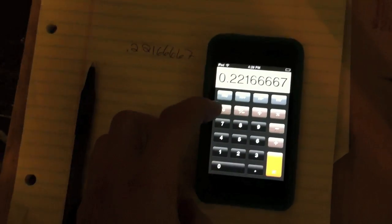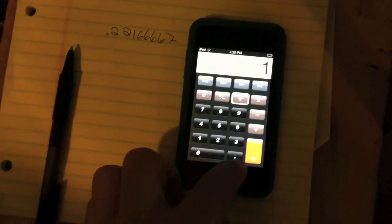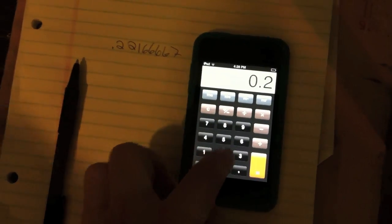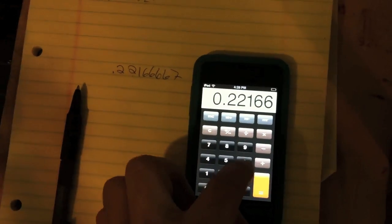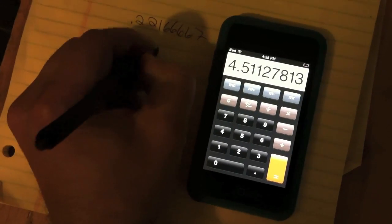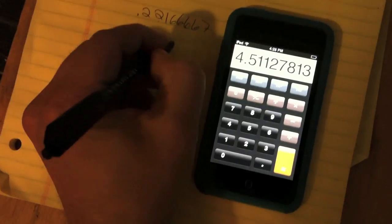So that's the percentage out of a minute. So we do one minute divided by .22166667, equals 4.51 liters per minute.